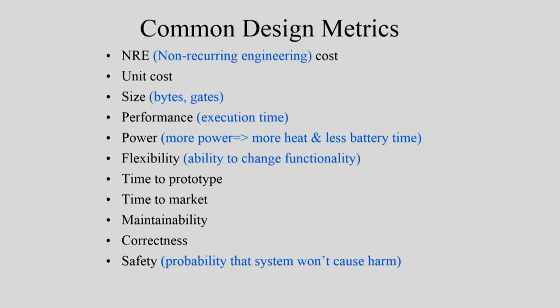Performance and execution time matter: the faster and larger your system, the more energy it requires and the less battery life you get. Time to prototype has become extremely important — design cycle times are now like six months as opposed to a few years ago, and missing the window means lost sales. Time to market, maintainability — the ability to upgrade a device on-site to increase its lifetime in the marketplace — and correctness are all important, as is safety: the probability that the system will not cause harm.